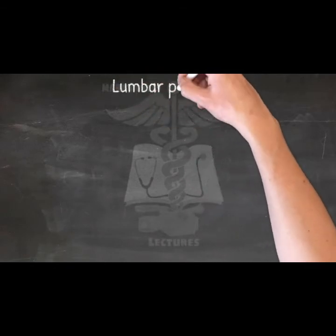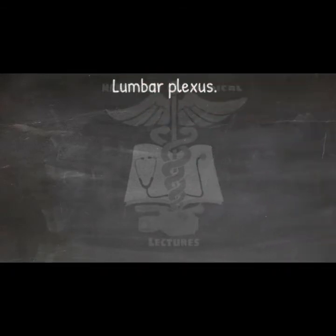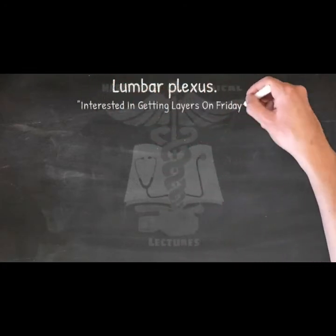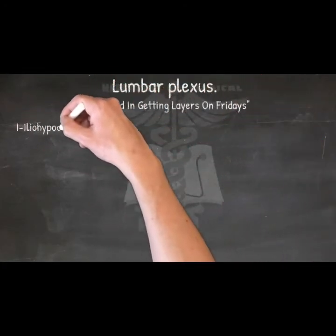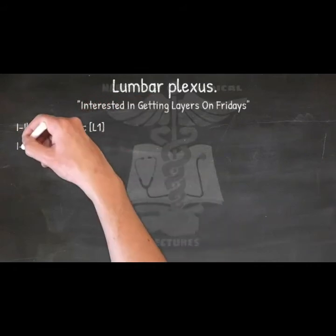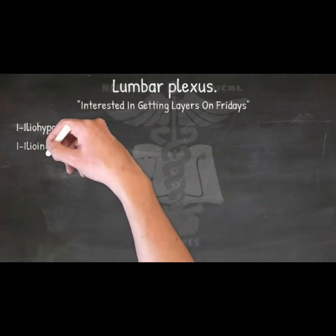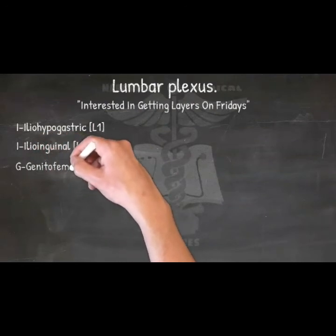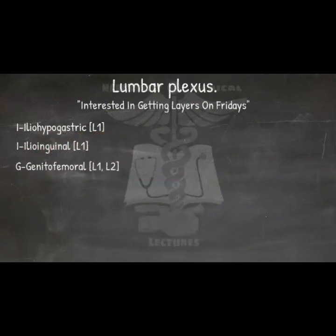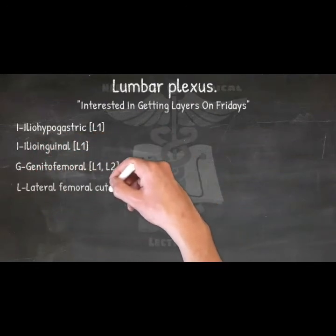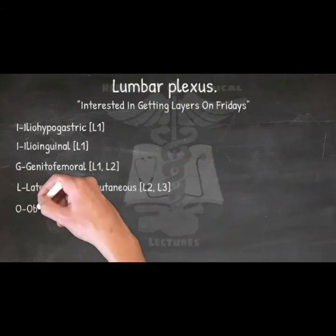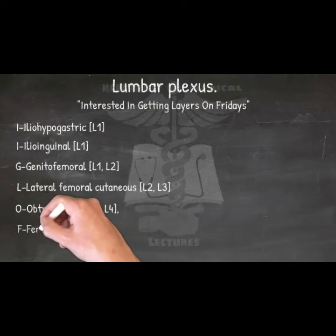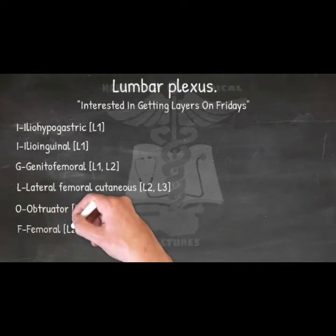Lumbar plexus — mnemonic: 'Interested In Getting Layers On Fridays.' Iliohypogastric L1, Ilioinguinal L1, Genitofemoral L1–L2, Lateral femoral cutaneous L2–L3, Obturator L2–L3–L4, and Femoral L2–L3–L4.